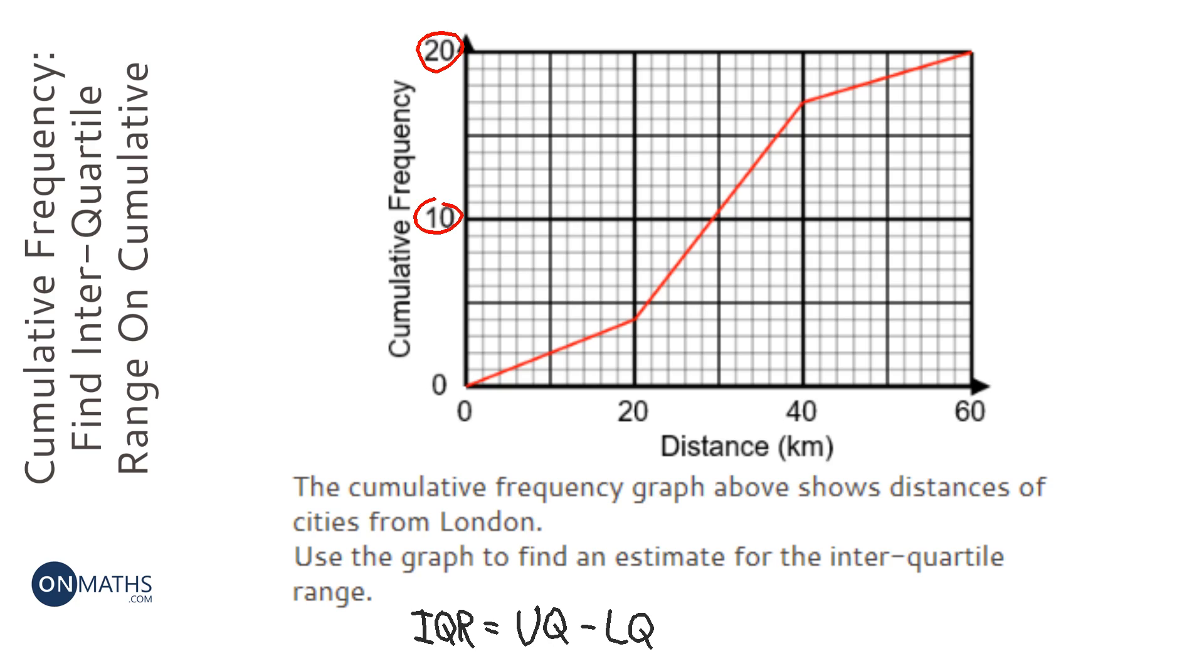We halve it, and that's what you'd normally use to find the median. Then we halve it again, and that will give you the lower quartile. Then we add the median and lower quartile together, so that would be 15, and that gets us the upper quartile.